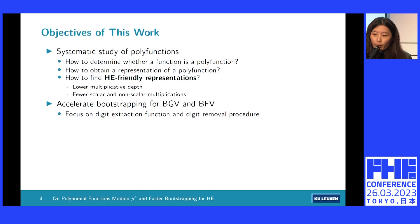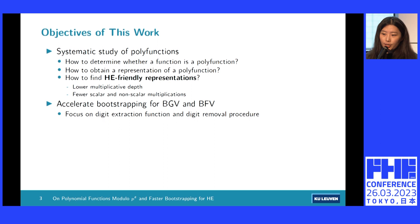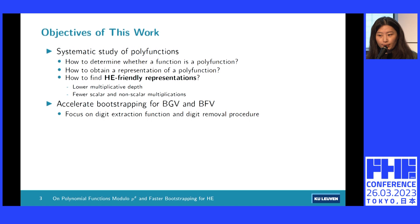In our work, we perform a systematic study of polyfunctions, answering three questions: first, how to determine whether a given function is a polyfunction; second, for a given polyfunction, how to find a representation of it. Moreover, the representation of a polyfunction is always non-unique, so how can we find representations that are more homomorphic encryption friendly? By that, we mean polynomials of lower multiplicative depth, or whose evaluation requires fewer scalar and non-scalar multiplications. With these insights, we optimize the digit extraction function and the digit removal procedure, hence accelerating bootstrapping as a whole.